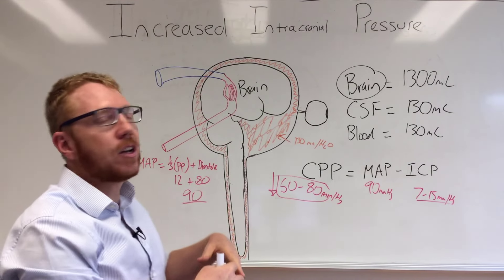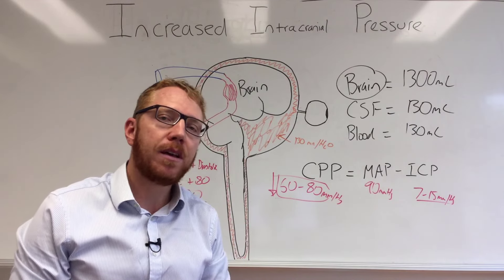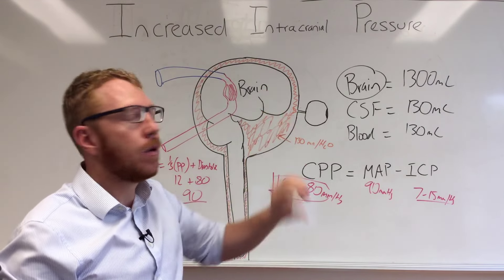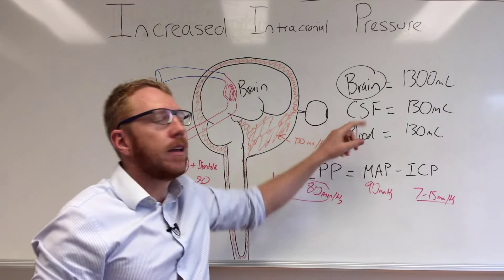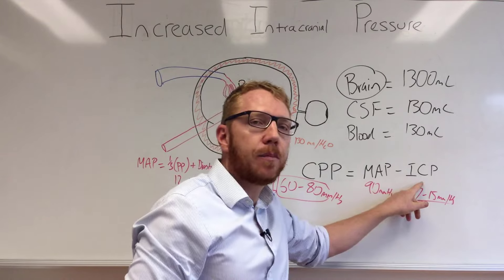If there's too much CSF made, such as a tumor in the choroid plexus, CSF will go up. Or if there's a blockage somewhere and it's not being drained away, the CSF increases, therefore so does ICP.